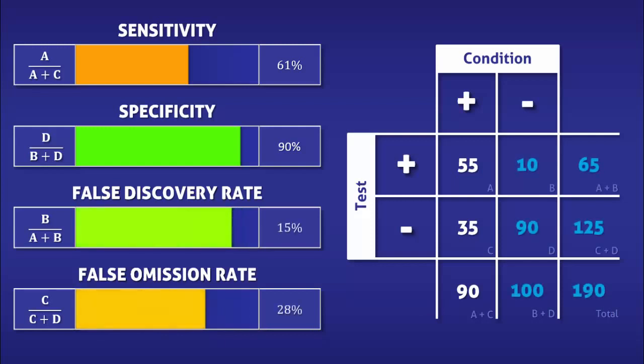Lastly, lowering the prevalence of the condition would increase the number of people without the condition both test positive and negative. The greater number of false positives would increase the false discovery rate, whereas the greater number of true negatives would decrease the false omission rate.